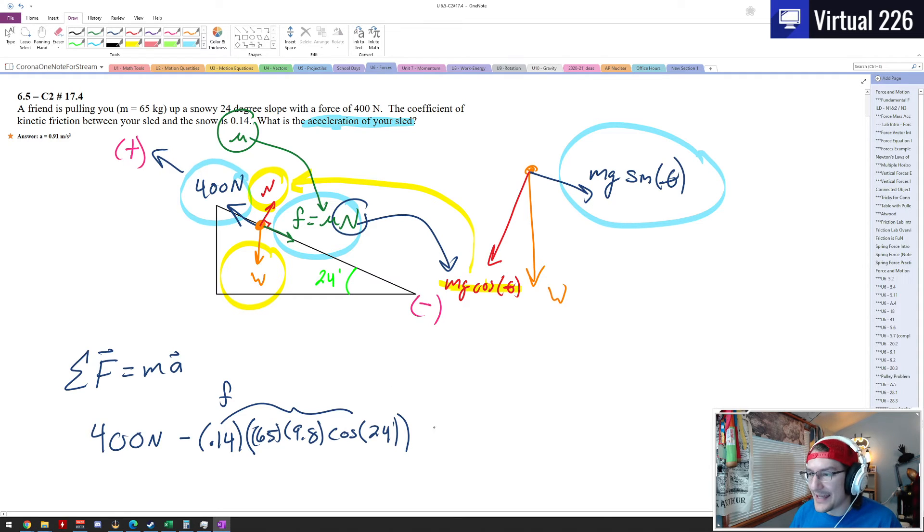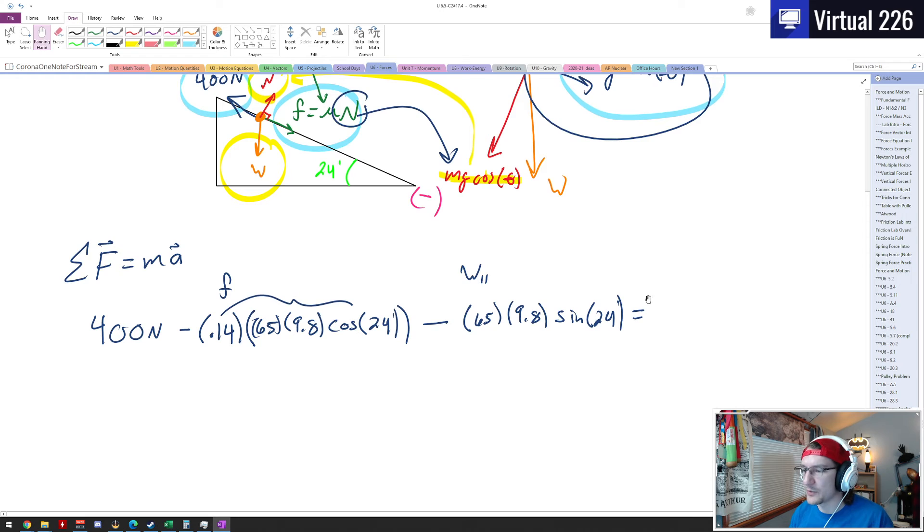So that's our entire frictional force. And then we need to subtract the weight component pulling us back down. So this is the minus, the weight parallel going down the hill. It's down the hill so it's negative, and that's mg sine of theta. So that's 65 times 9.8 gravity times the sine of 24 degrees. And all of this combined will equal ma, it will equal our mass which is 65 kilograms multiplied by what we're actually looking for, acceleration.